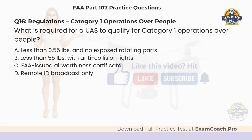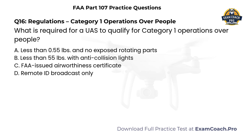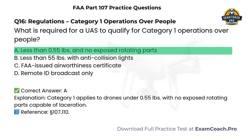Now let's continue. Regulations. Category 1. Operations over people. What is required for a UAS to qualify for Category 1 operations over people? A. Less than 0.55 pounds and no exposed rotating parts. B. Less than 55 pounds with anti-collision lights. C. FAA-issued airworthiness certificate. D. Remote ID broadcast only. Correct answer: A. Category 1 applies to drones under 0.55 pounds with no exposed rotating parts capable of laceration.